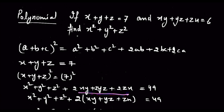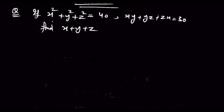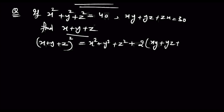देखिए पहले question में हमारे पास x plus y plus z given था तो हमने उसको square किया था। इस question में भी आपको यही करना है — आप x plus y plus z whole square करेंगे तो हमारे पास same आएगा: x square plus y square plus z square plus 2 common पहले से ही निकाल लेते हैं, xy plus yz plus zx।